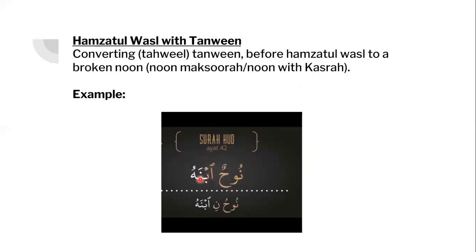This presents a problem because the next word starts with Hamzatul Wasal, which is a Sakin letter. You can't have two Sakin letters together — that is the standard rule in Arabic. So I am going to pronounce one of the Dhamma sounds and convert the second one into a Noon with a Kasra, saying something like Noon Hurnibna Ho. I am pronouncing my Tanwin but connecting the Noon of the Tanwin with the Kasra to the next letter, changing the Tanwin so that I can pronounce Hamzatul Wasal by converting the Tanwin to a broken Noon.